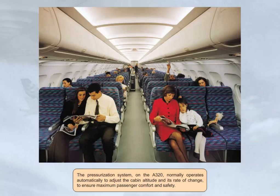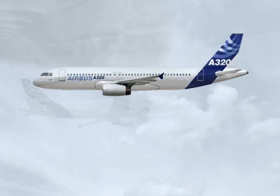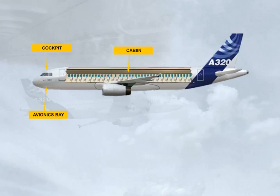The pressurization system on the A320 normally operates automatically to adjust the cabin altitude and its rate of change to ensure maximum passenger comfort and safety. The pressurized areas are the cockpit, the avionics bay, the cabin, and the cargo compartments.